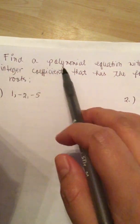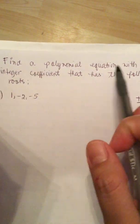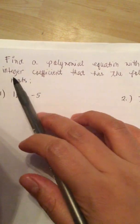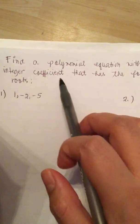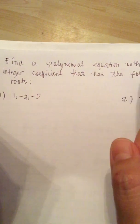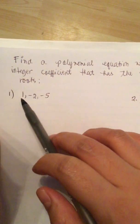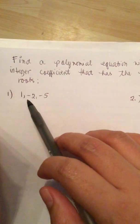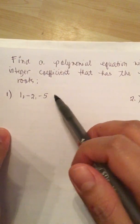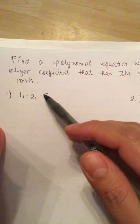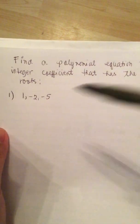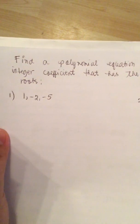Find a polynomial equation with integer coefficients that has the following roots: 1, minus 2, and minus 5.